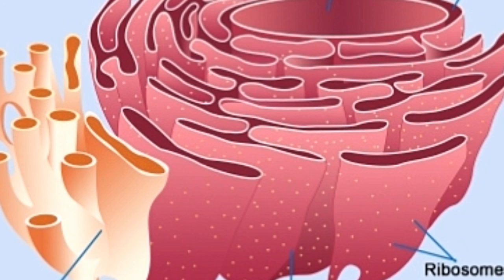The smooth endoplasmic reticulum plays a crucial role in various metabolic processes. Its existence is important for some life-sustaining processes, like protein transportation, carbohydrate and lipid synthesis, and drug detoxification.